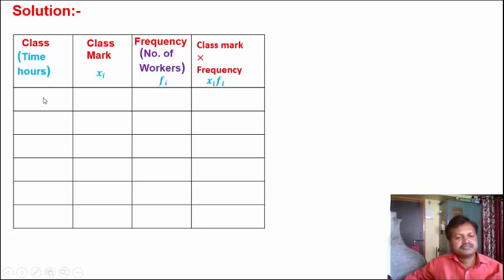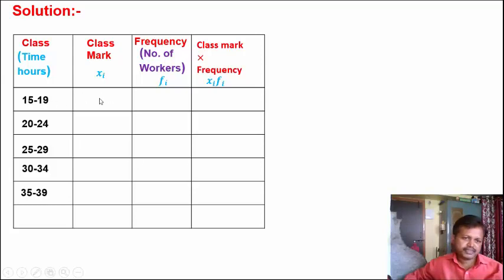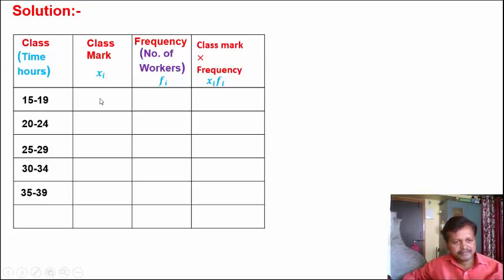Fill up the first column by taking the groups given in the example. The groups are: 15 to 19, 20 to 24, 25 to 29, 30 to 34, and 35 to 39. Now calculate the class mark for each group. Class mark = (lower class + upper class) / 2. For 15 to 19: (15 + 19) / 2 = 34 / 2 = 17. Similarly, the class marks are 22, 27, 32, and 37.